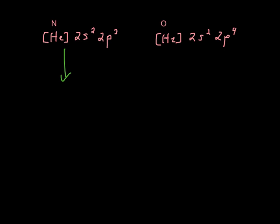So in order to turn this to N⁺, we're going to take away one of these electrons and become 2s² 2p². We're going to take away one of these electrons to become 2s² 2p³.